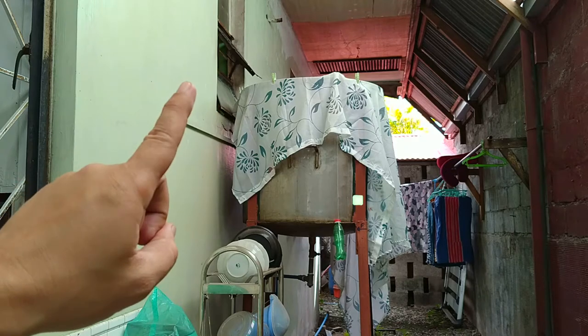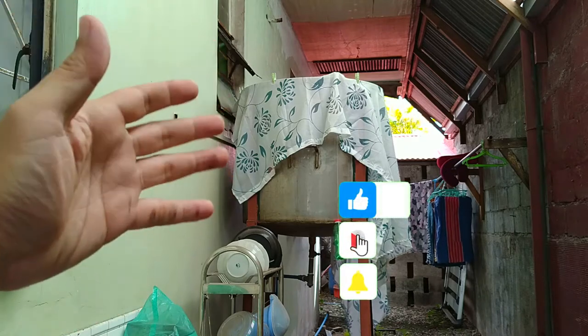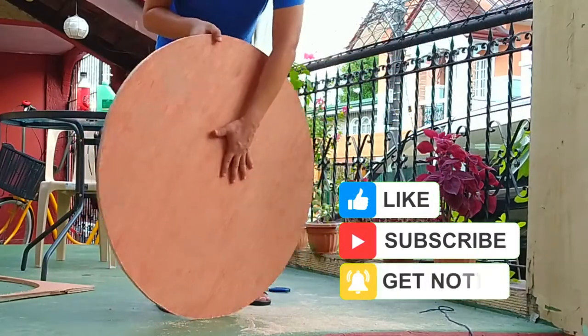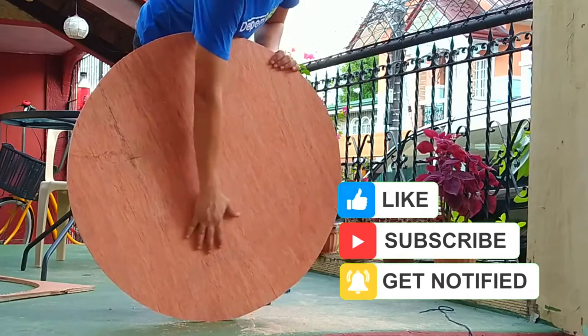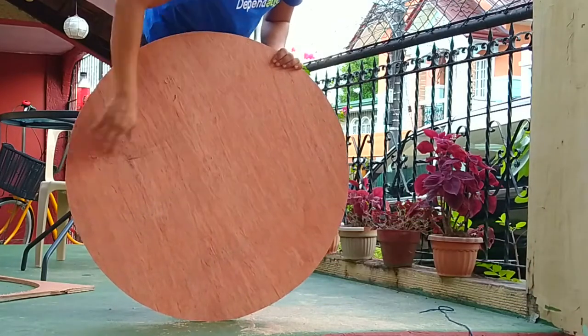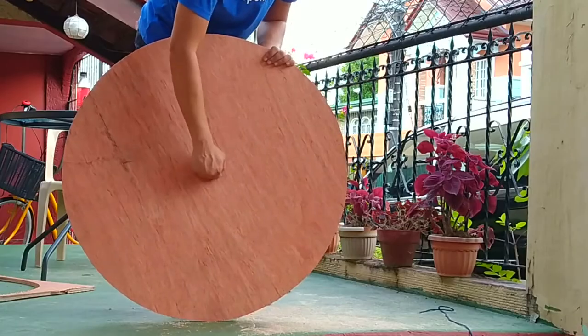But what if you needed to draw a really big circle, and you have to cut it on a half inch thick plywood? Something like this. Now I doubt a compass and a pair of scissors will do the job. So keep on watching, and I'll show you how.